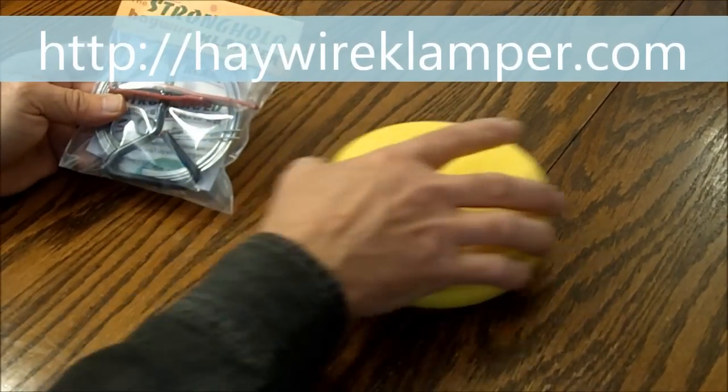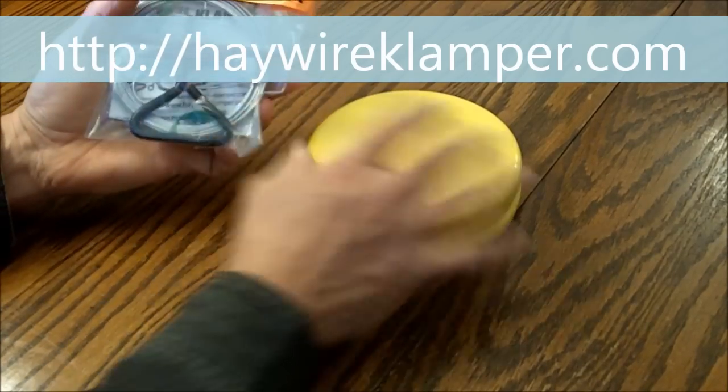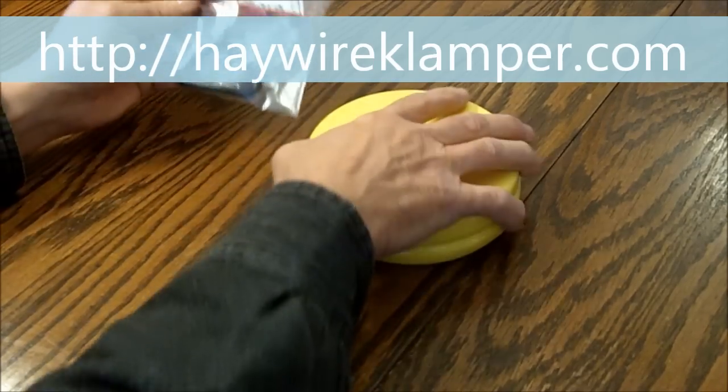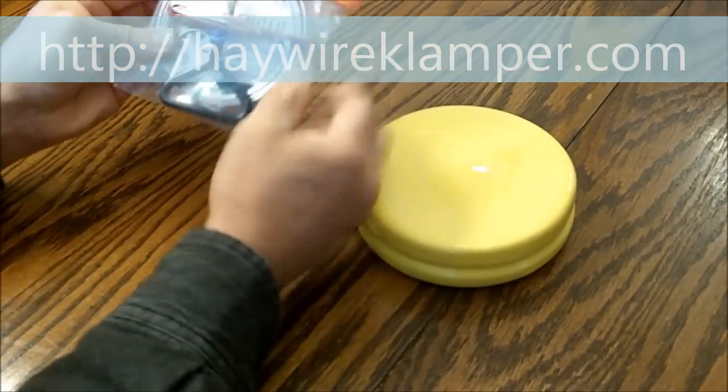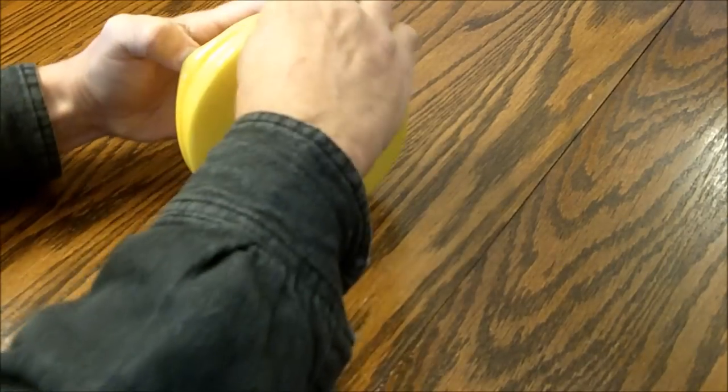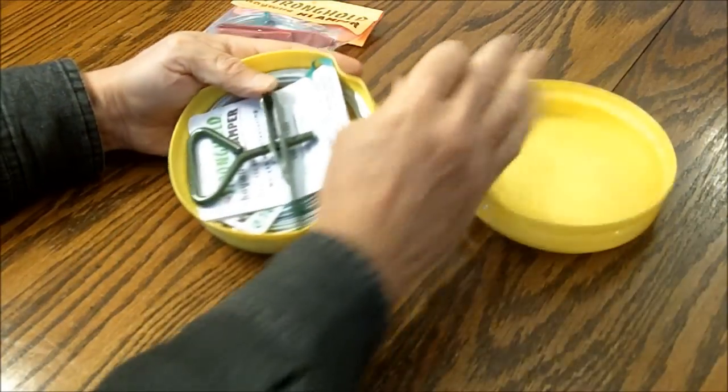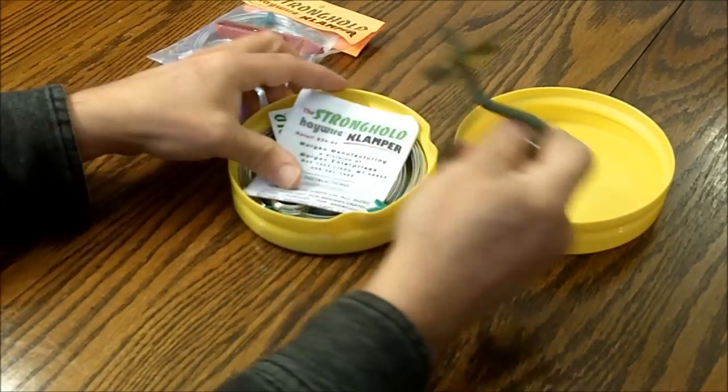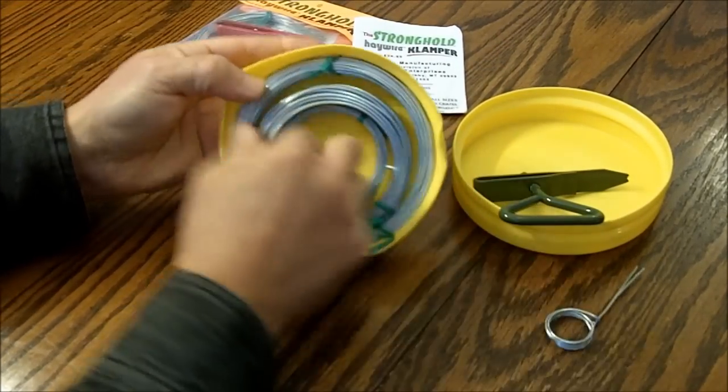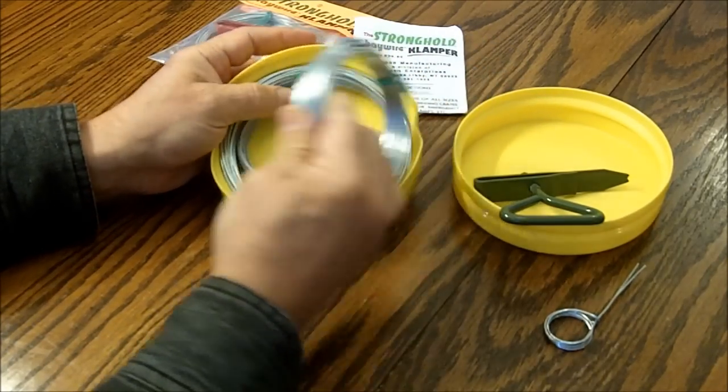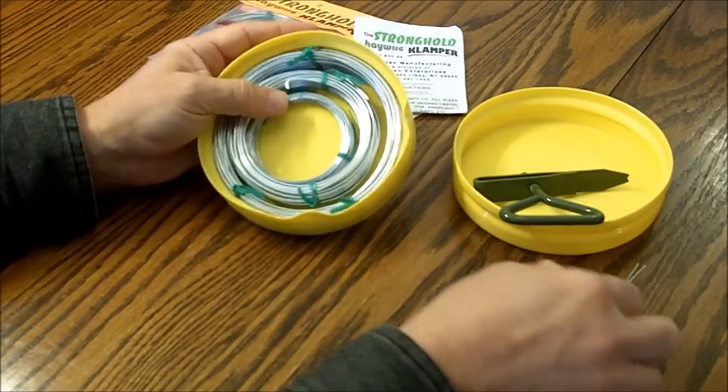It comes in two versions. The clamper is the same. This is the regular clamper. It comes with a small amount of wire. Here is the Survival Pack, and I recommend the Survival Pack because it costs a little bit more, but you get a whole lot more wire, and you get three different gauges of wire.